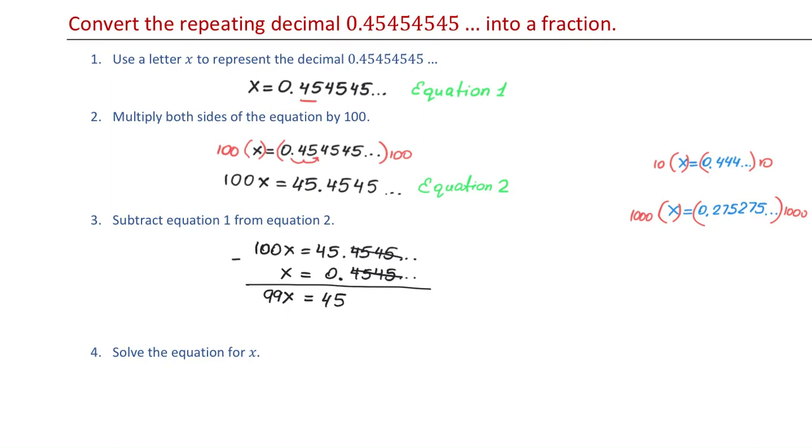And in step 4 we have to solve this equation 99X equals 45. To solve for X we will divide this side by 99 and the other side by 99. On the left side 99 and 99 will cancel. So X will be equal to 45 over 99. Now this fraction can be reduced by dividing the top and the bottom by 9.